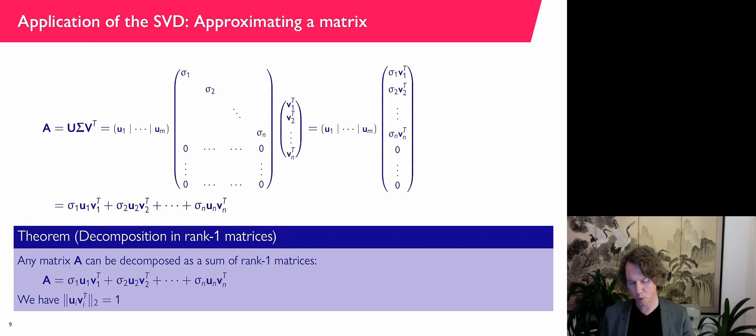Now, the way we apply this, the way we can use this, is that we write our matrix as U sigma V transpose. If you write that out, so if I express U in terms of its columns and V transpose in terms of rows here, then you can do the matrix multiplication.